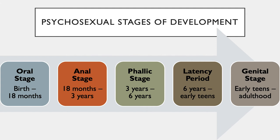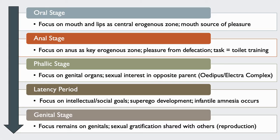The first stage, the oral stage, begins at birth and lasts approximately 18 months. The erogenous zone is the mouth, which is basically the libido focusing its energy on getting fed and satisfying the id's desire for pleasure. A so-called oral fixation results if this need is not successfully met. Someone with an oral fixation will continue to seek out satisfaction of oral pleasure by smoking, drinking, talking, overeating, etc. Supposedly, these individuals also have a tendency towards dependent personalities.